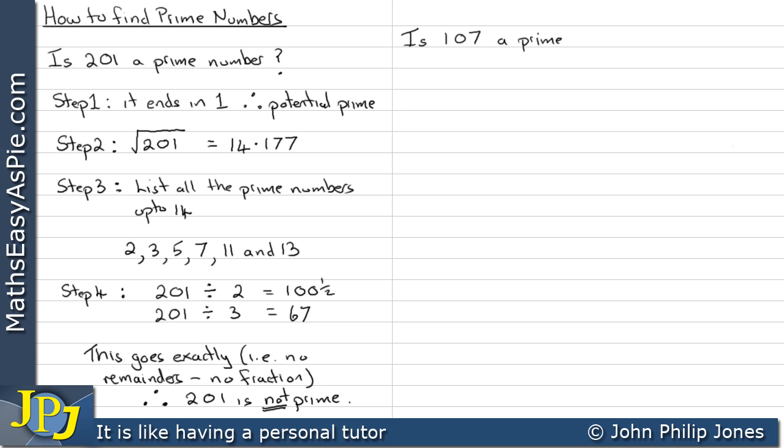Is 107 a prime number? Step 1. It ends in 7 therefore potential prime. Step 2. We take the square root of 107 to give us 10.344.